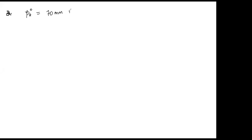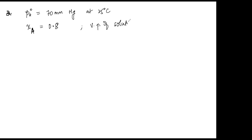Problem 2: P°_A = 70 mmHg at 25°C. It forms a solution with B where mole fraction of A is 0.8. The vapor pressure of the solution at 25°C is 84 mmHg. Find P°_B.